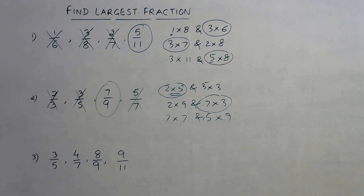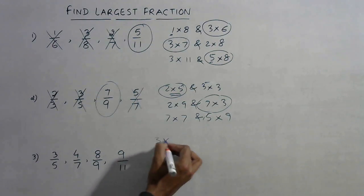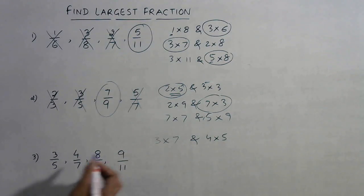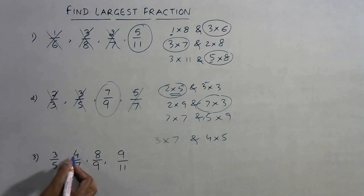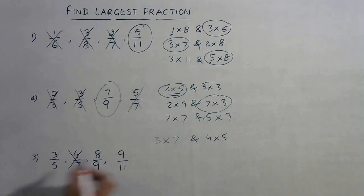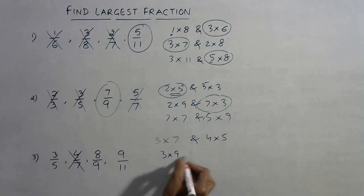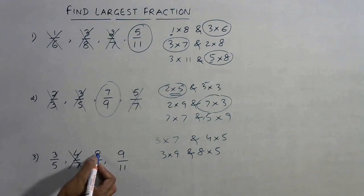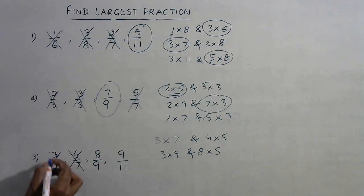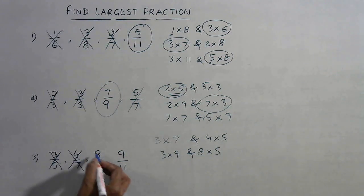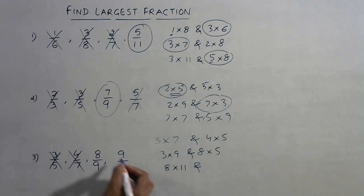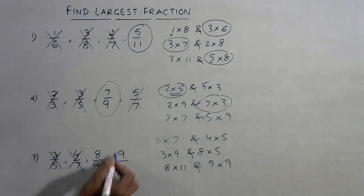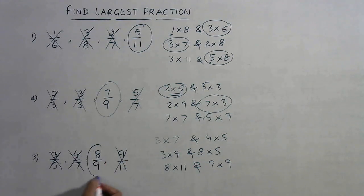Let's practice one more question. Compare the first two: three into seven is 21 and four into five is 20. Twenty-one is greater than twenty, so 4/5 is discarded. Now compare 3/5 and 8/9: three into nine is 27 and eight into five is 40. Forty is larger so 3/5 is discarded. Finally, eight into eleven is 88 and nine into nine is 81. Eighty-one is smaller and 88 is larger, so we discard the other fraction.